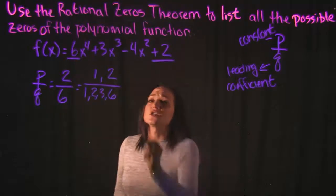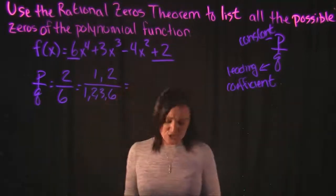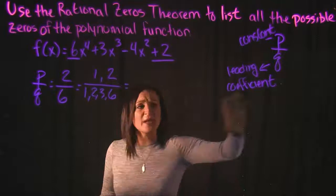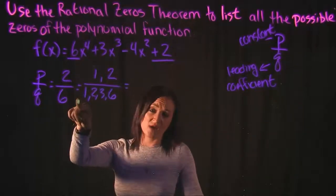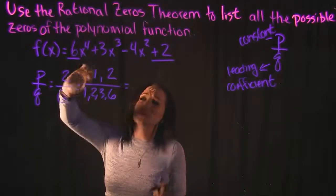That's it. So what we then need to do after this is we need to make a list using every number in the numerator and putting it over every number in the denominator. So what that would look like, starting with 1,